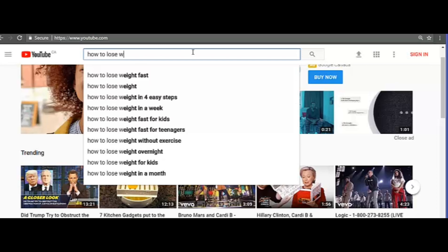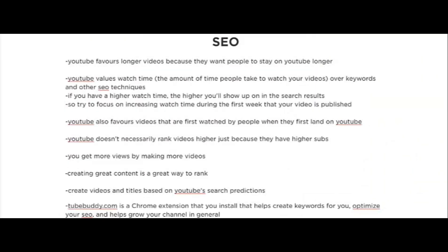You could make videos on these topics. For example, getting more specific: 'how to lose weight in four easy steps,' 'how to lose weight in a week,' 'how to lose weight overnight,' and so on. Lastly, I want to recommend a tool called TubeBuddy — tubebuddy.com — which is a Chrome extension that you install that helps create keywords for you and helps optimize your SEO and grow your channel in general.